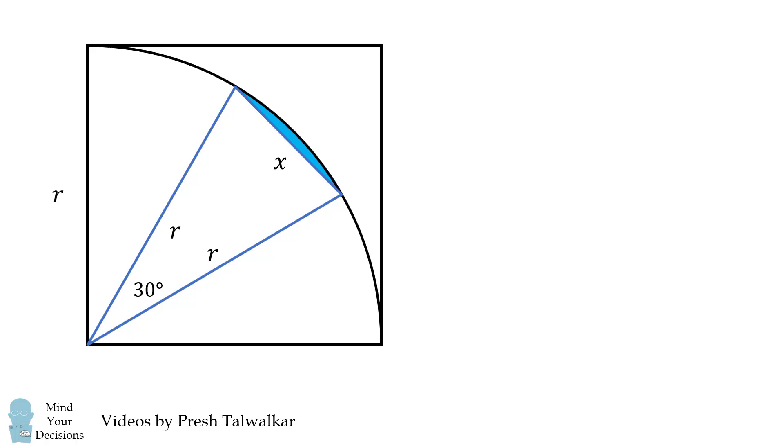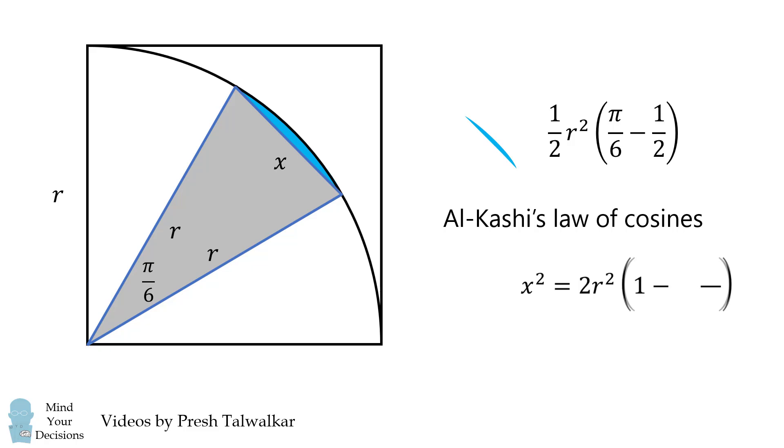We'll change the angle from degrees to radians, and then we'll use our formula. Sine of pi over 6 is equal to 1 half. We then will calculate the value of x squared using Al-Kashi's law of cosines. We'll substitute in and simplify.